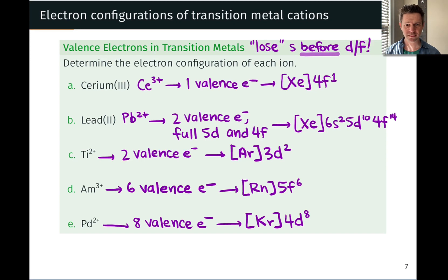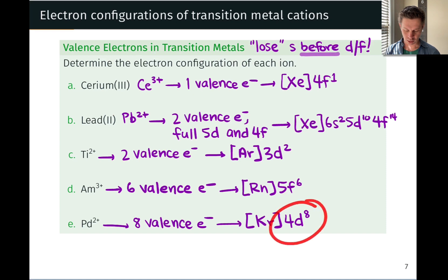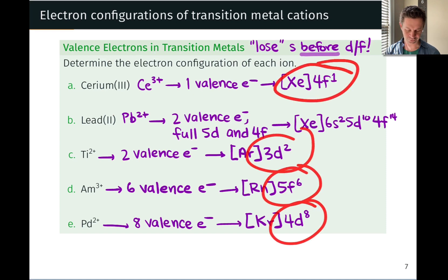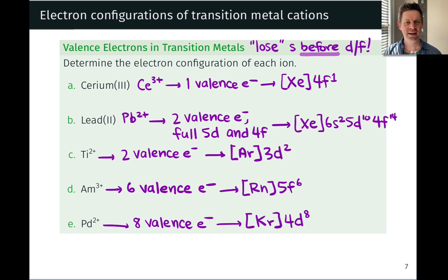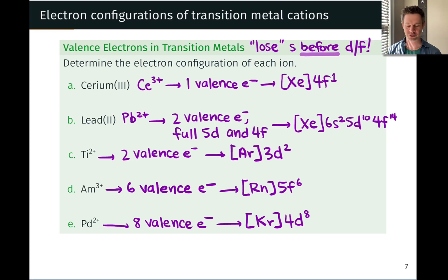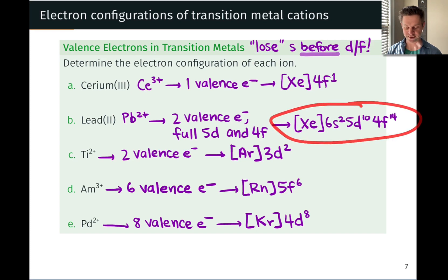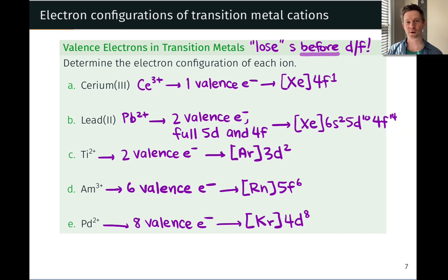Notice that in all of these transition metal cations, the only valence electrons are in either D or F orbitals. Lead is a little out of place — it's a main group element — but its cation dips into the transition series in a sense, with the electron configuration equivalent to neutral mercury: [Xe]6s²5d¹⁰4f¹⁴.